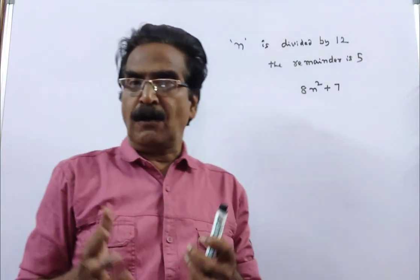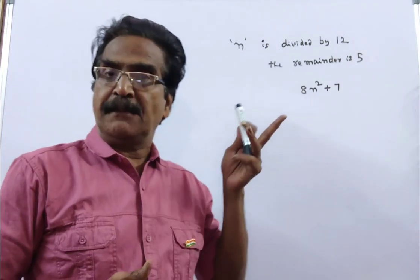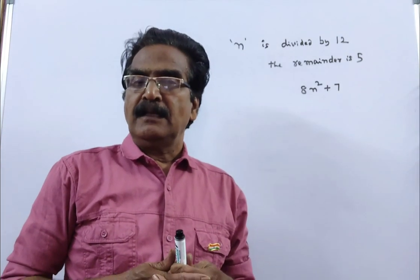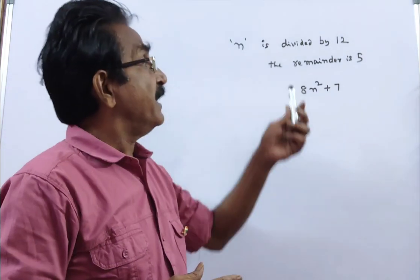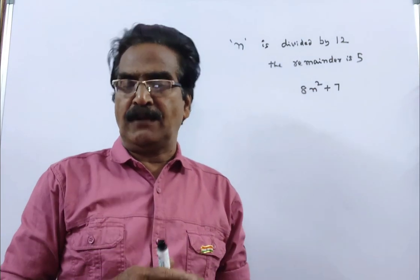When a positive integer n is divided by 12, the remainder is 5. What is the remainder when 8n² + 7 is divided by 12?